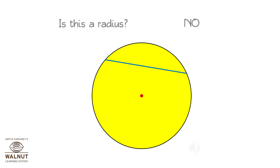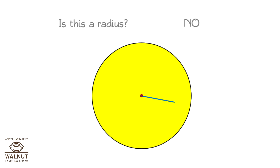A radius has to go from the center of the circle to the edge of the circle. This line has both ends on the edge of the circle — is this a radius? No. Why not? Because it does not go from the center to the edge. A radius has to go from the center to the edge; this line stops somewhere in between. Is this a radius? Yes — it starts at the center and goes all the way to the edge. It is indeed a radius of the circle.